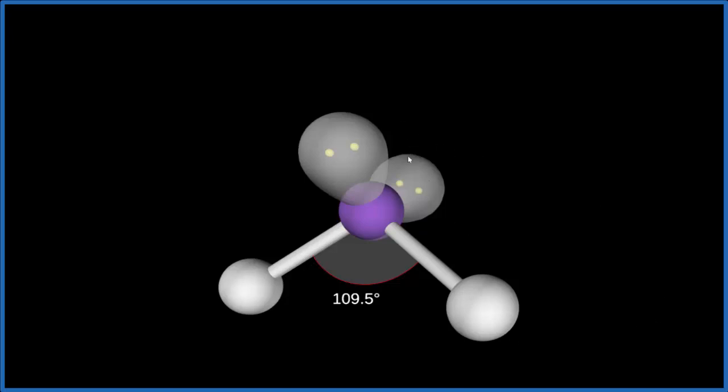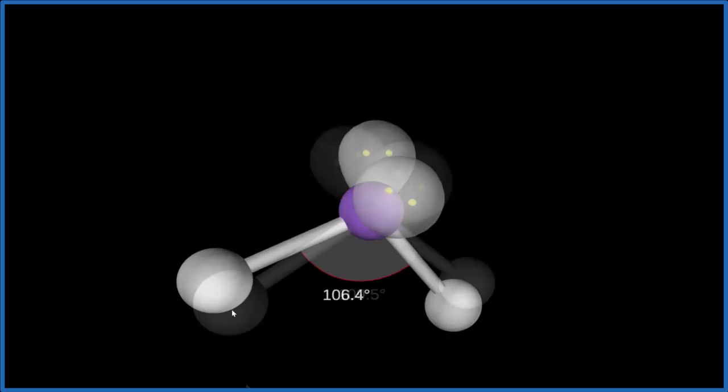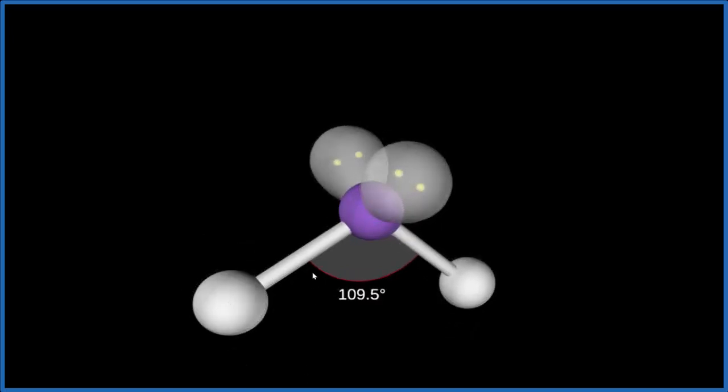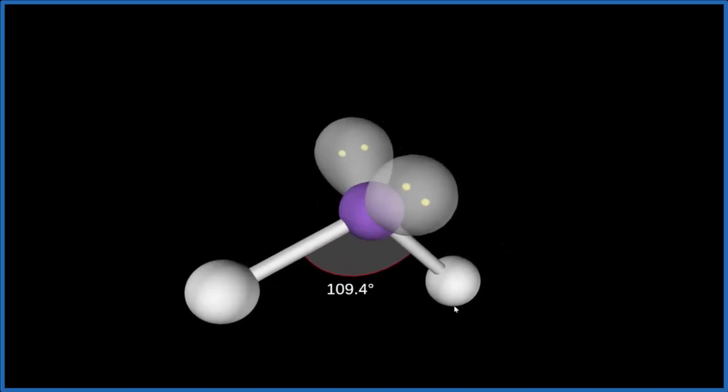So NH2-, this has a bent molecular geometry. If you wanted to talk about the electron geometry, we have what's called a tetrahedral electron geometry because we have these four things spread out.